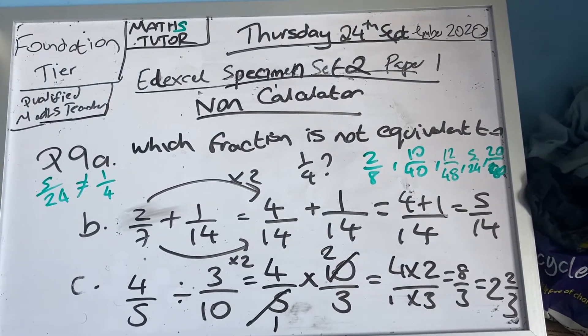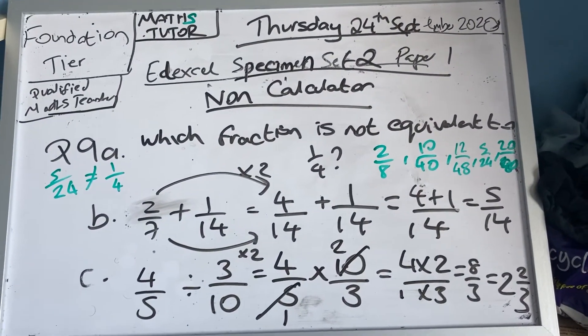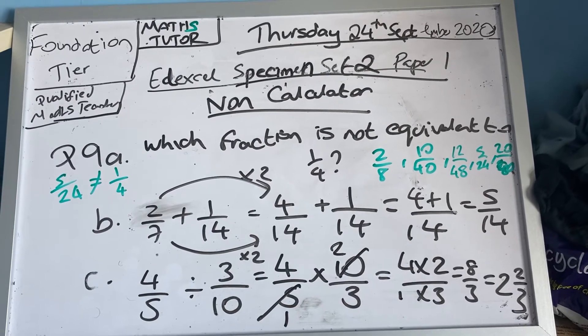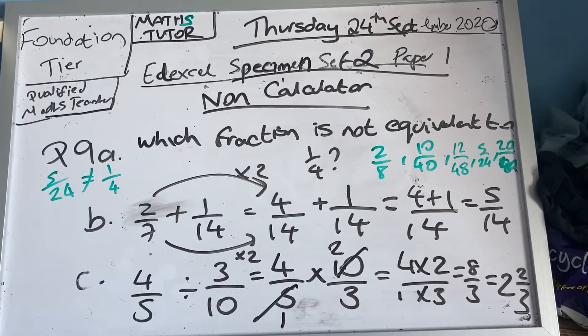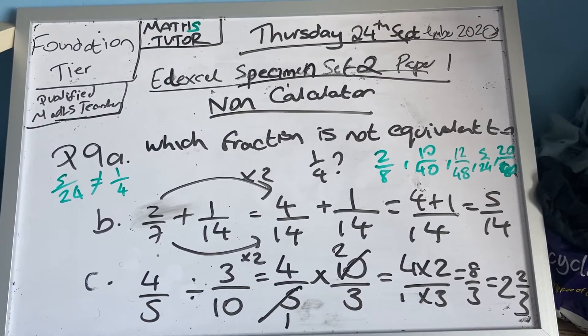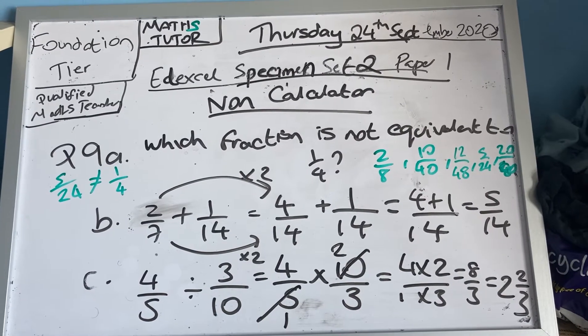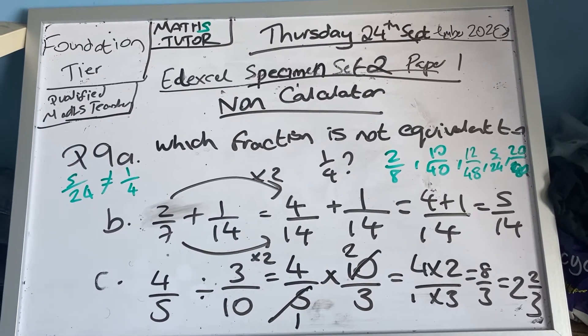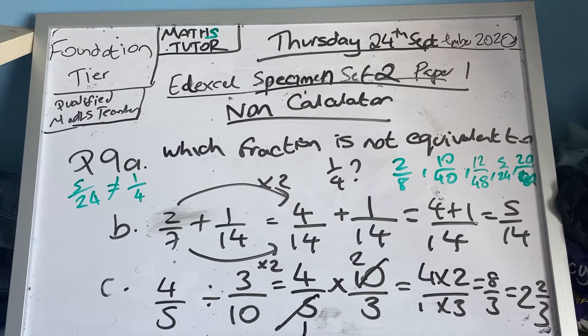Part a says you're given five fractions and it asks which fraction is not equivalent to a quarter: two-eighths, ten-fortieths, twelve over forty-eight, five over twenty-four, and twenty over eighty.